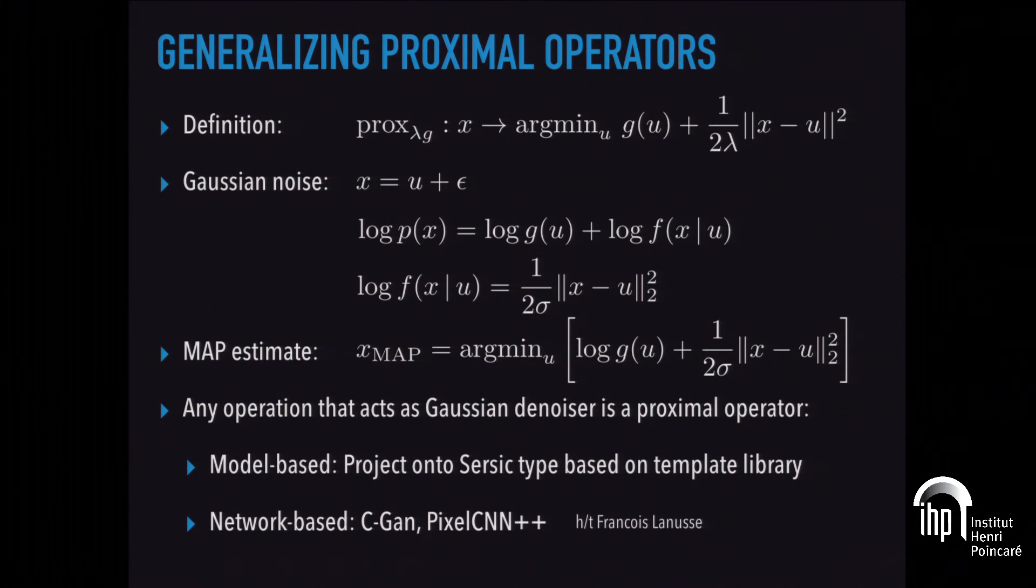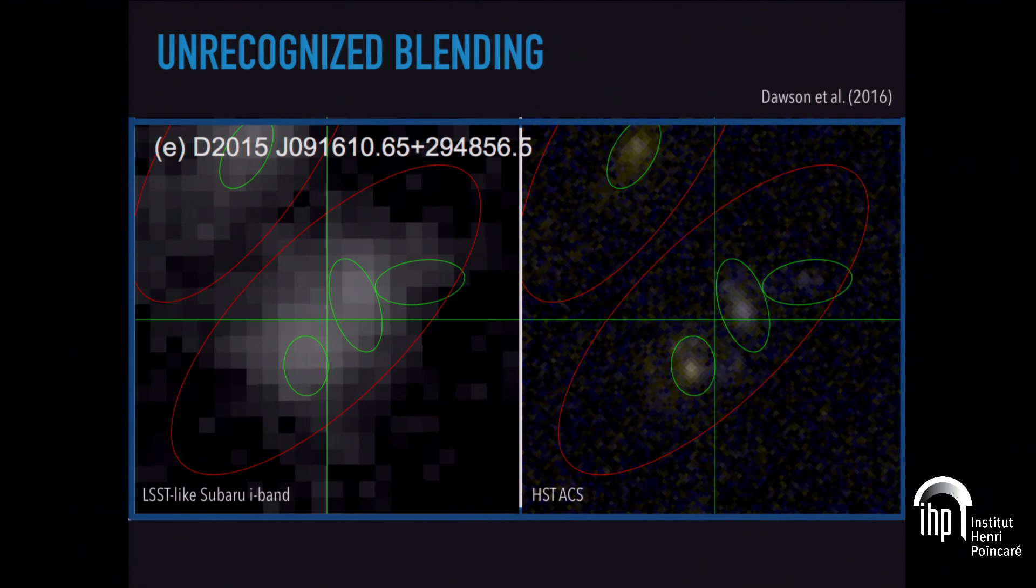It brings me to the last point in my talk. We have a fair amount of difficulty just knowing how many objects there are. It comes by the name of unrecognized blending. There's a paper by Will Dawson from a few years ago. This is a ground-based image taken with Subaru. That's the same scene in HST, and you can clearly see that there are three objects. From ground, this looks like one elliptical object.